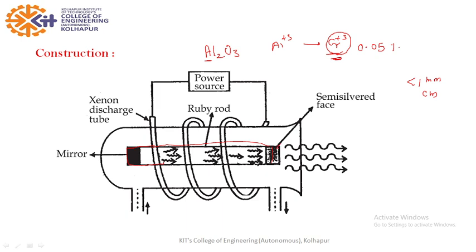Its one end is semi-silvered. Semi-silvered means partly reflecting, partly refracting. This end is circular. This part is reflecting and this central part is transmitting. So the laser beam will come out through this region.